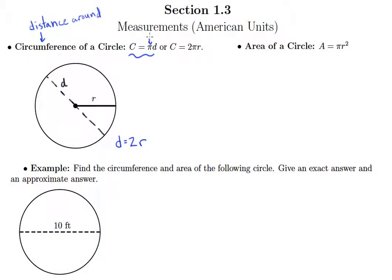So you can either use the formula circumference equals pi times diameter, or you can use circumference equals two times pi times radius. They both give you the circumference, and it just depends on whether you have the diameter or the radius.